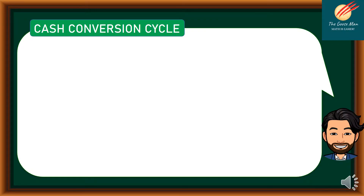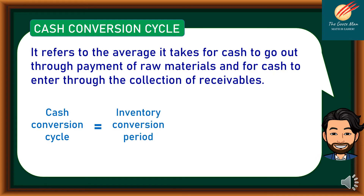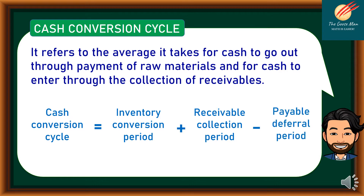Whenever we talk about the cash conversion cycle, it refers to the average time it takes for cash to go out through payment of raw materials and for cash to enter through the collection of receivables. We will use this formula: cash conversion cycle equals inventory conversion period plus receivable collection period minus payable deferral period.